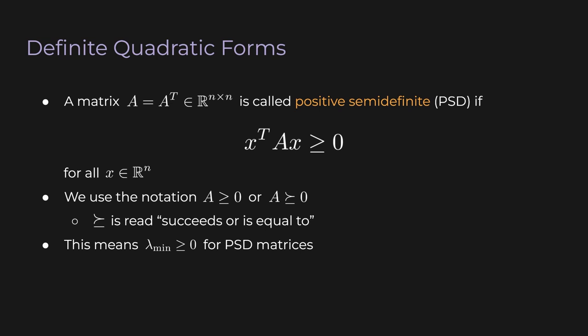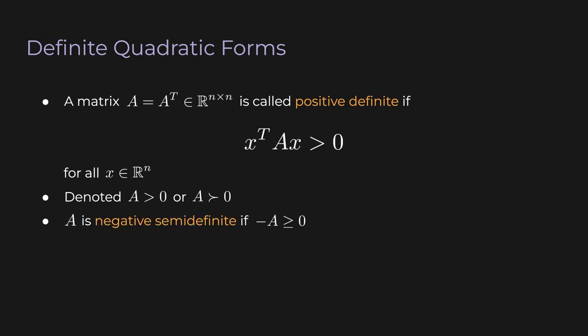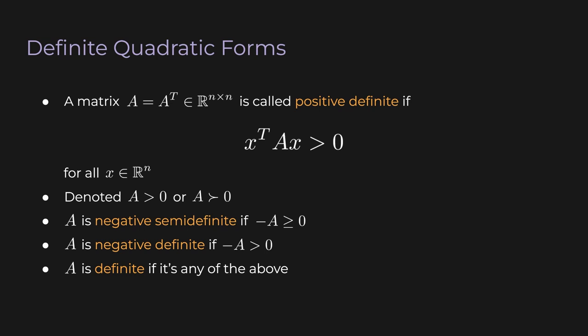A real symmetric matrix is called positive definite if x transpose Ax > 0 for all x — we've simply replaced ≥ with a strict >. We denote this as A > 0 or A succeeds 0. Flipping the inequality: A is negative semidefinite if −A ≥ 0, and negative definite if −A is positive definite. If A satisfies any of these four conditions, we say A is definite; a quadratic form involving a definite matrix is a definite quadratic form. If A is none of these, we say A is indefinite.